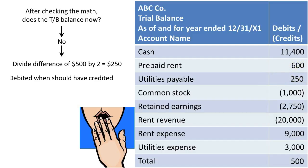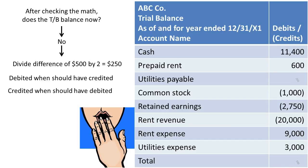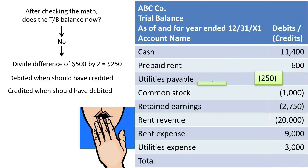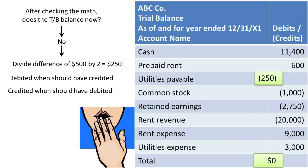You'll notice Utilities Payable is a liability — it normally should have a credit balance because it increases on the credit side. Therefore, it appears we debited Utilities Payable $250 when we should have credited it $250. Had the total been a credit of $500, it could indicate we credited instead of debited. By putting in the correct credit balance of $250, the trial balance now balances.